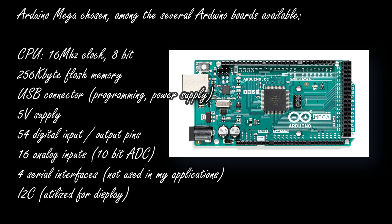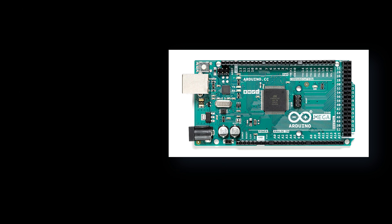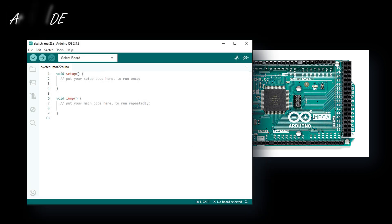What's really interesting is the amount of different input/output interfaces available, which is what I utilized for my hi-fi projects. We have 54 digital input/output pins, and 16 analog inputs. Arduino has a 10-bit analog-to-digital converter, through which I can read the voltage applied to each one of those 16 analog inputs. Then we have four serial interfaces, and I2C interfaces which I utilize for the connection to the displays.